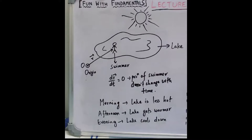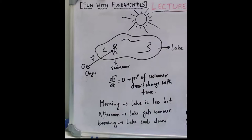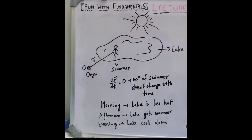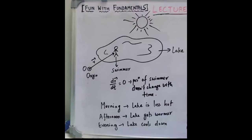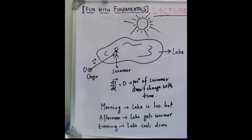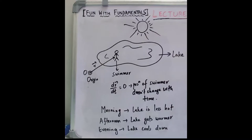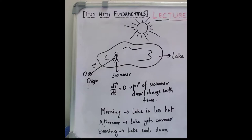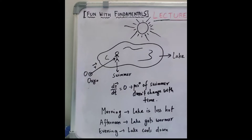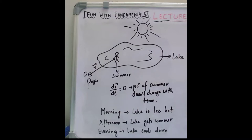Here a swimmer is standing in a lake facing the sun. As the day progresses, the lake will become warmer due to the sun and the swimmer is aware of this fact. Let r vector be the position vector of the swimmer with respect to some arbitrary origin O. The swimmer will always be stationary — that is, dr/dt is equal to zero — so the position of the swimmer will not change with respect to time. In the morning the lake will be relatively cooler, in the afternoon it will get warmer, and in the evening it will cool down again. The swimmer will be able to feel the changes in temperature of the lake because he is aware of the presence of the sun.